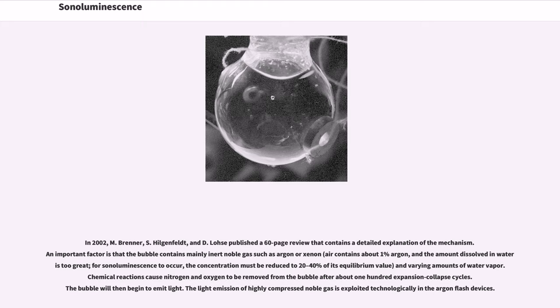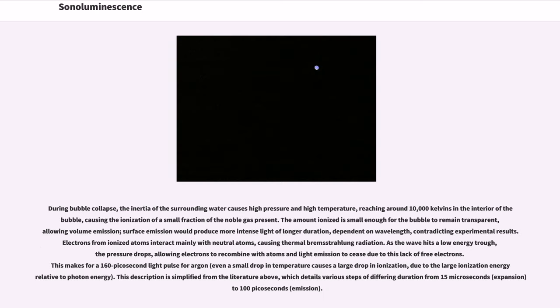The light emission of highly compressed noble gas is exploited technologically in the argon flash devices. During bubble collapse, the inertia of the surrounding water causes high pressure and high temperature, reaching around 10,000 kelvins in the interior of the bubble, causing the ionization of a small fraction of the noble gas present. The amount ionized is small enough for the bubble to remain transparent, allowing volume emission. Surface emission would produce more intense light of longer duration, dependent on wavelength, contradicting experimental results. Electrons from ionized atoms interact mainly with neutral atoms, causing thermal bremsstrahlung radiation.